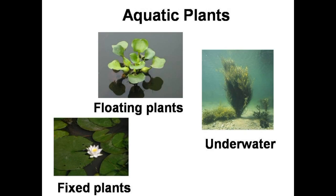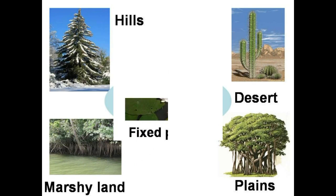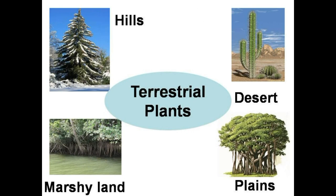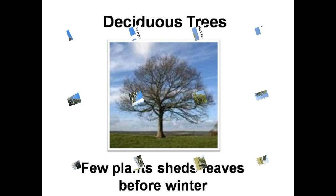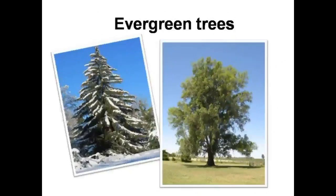Plants that grow on land are called terrestrial plants. Some terrestrial plants like oak, mulberry, maple, etc. shed their leaves before winter to protect themselves from cold — these are called deciduous plants. But many plants keep their leaves throughout the year; these are called evergreen plants, like mango, pine, etc.